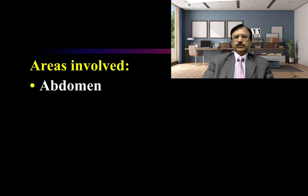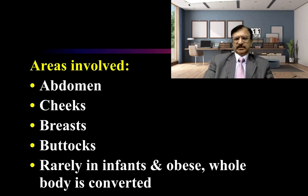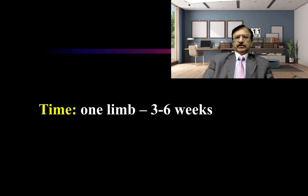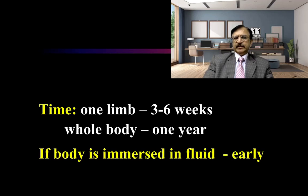The areas usually involved are the abdomen, cheeks, breasts, and buttocks. In infants and obese persons, the whole body is converted into adipocere. In other cases, it is limited to the areas described. The time taken to develop in one limb is three to six weeks, and the whole body approximately one year. If the body is immersed in fluid, this will occur earlier.